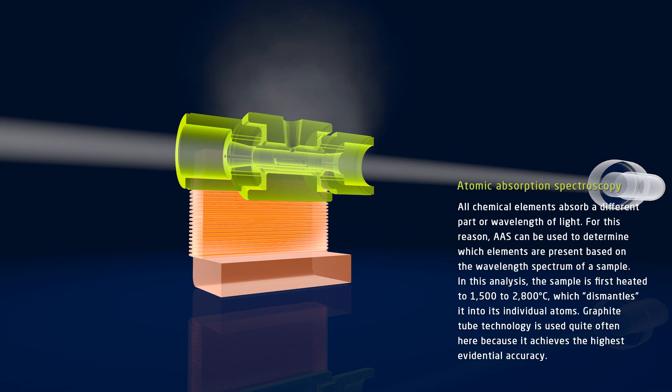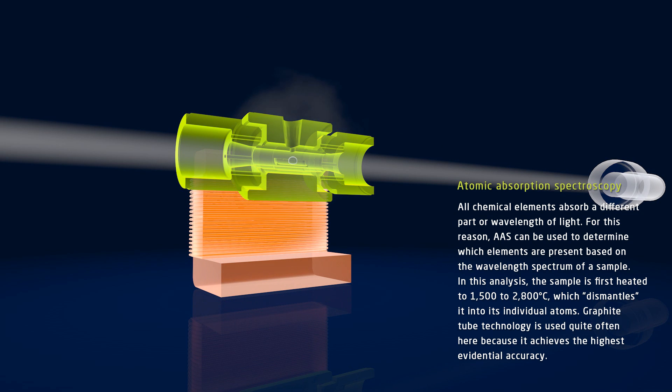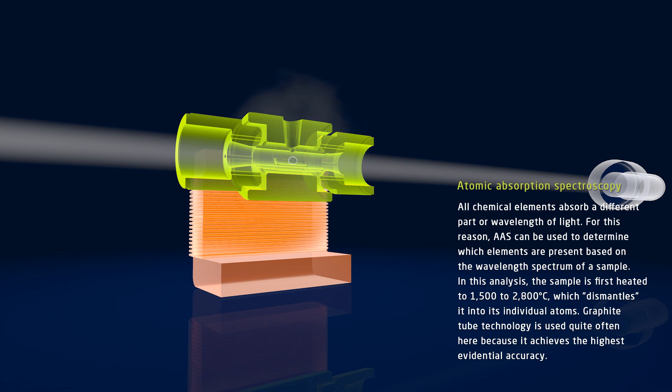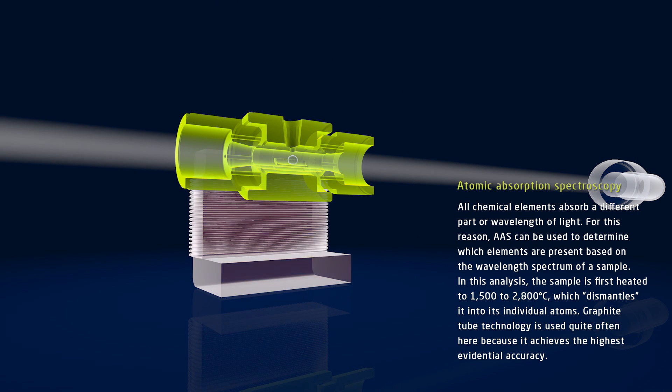AAS takes advantage of the fact that all chemical elements absorb different parts of light. Depending on the element, a certain part of the wavelength of light is absorbed. For this reason, based on the wavelength spectrum of a sample, the elements present can be determined.